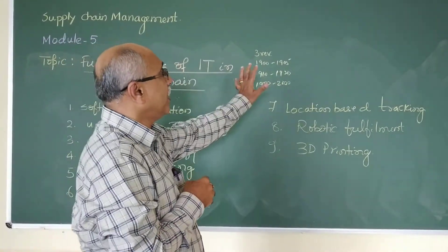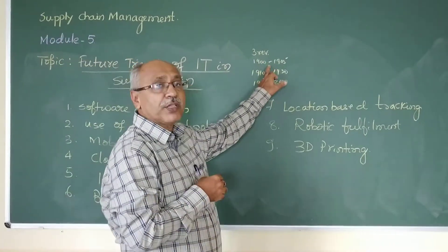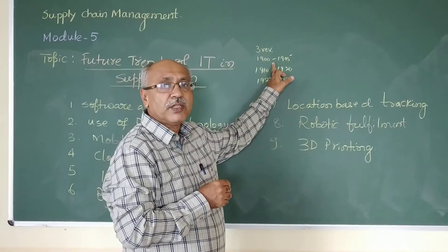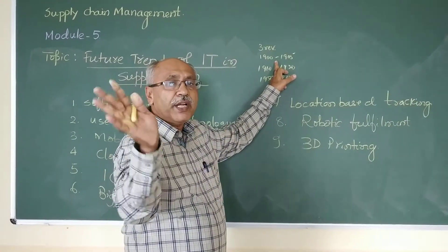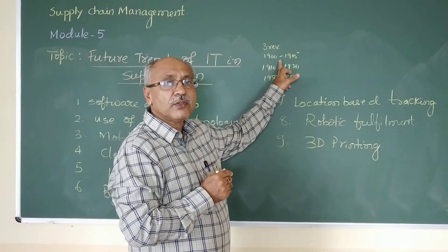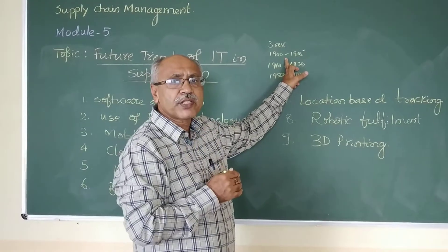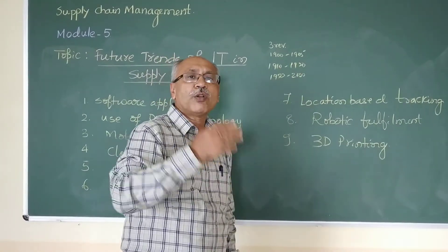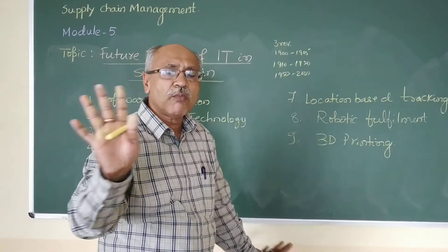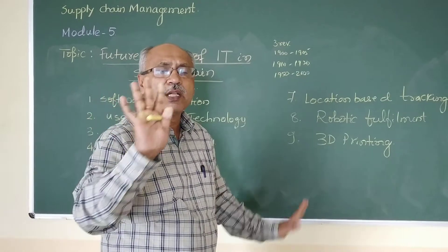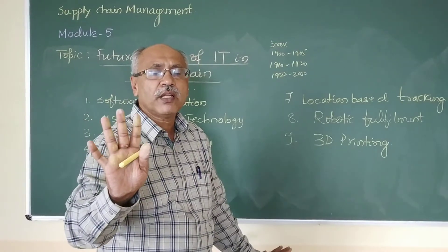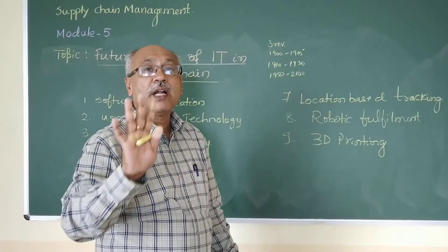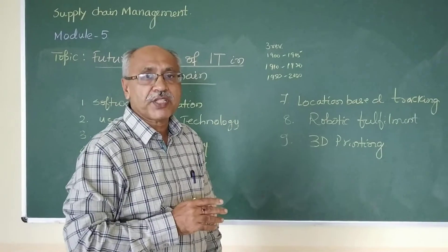In the first revolution of supply chain management, there was very low variety of products. For example, Ford Motors had only one model, called the black color car, named the T model.